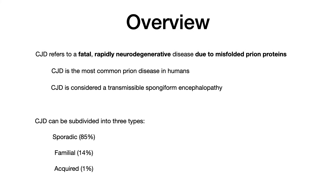CJD can be subdivided into a couple of different types. The sporadic type is the most common, accounting for about 85% of all cases, with no known cause. There is also the familial type, which is around 14 to 15% of cases, due to a mutation in the PRNP gene that causes glutamic acid to be replaced by lysine, leading to formation of misfolded prions.